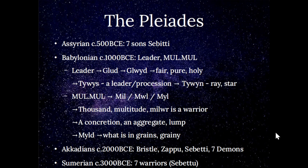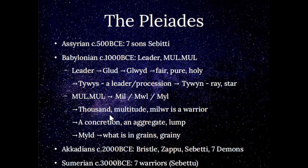In the Babylonian tradition, 'leader' is 'glud,' which means fair, pure, and holy. 'Tuis' is also a word for leader — a procession — and 'tuin' is a star, so the Pleiades is leading the procession. In Mul-Apin we have Mul-Mul. In Welsh the U is pronounced the same as I, so this would be Mil or Mool. 'Mil' means a thousand but figuratively a multitude. 'Milwyr' is a warrior — which will be important later — and 'mool' is a concretion, an aggregate or lump, while 'mould' is what is grainy. This describes the Pleiades: a multitude in a lump, a grainy multitude.